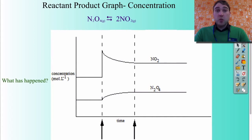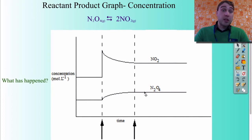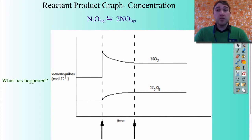So we talked about concentration and what happens, and this is what you would see on a graph — a sharp increase or decrease of one of the reactants or products.